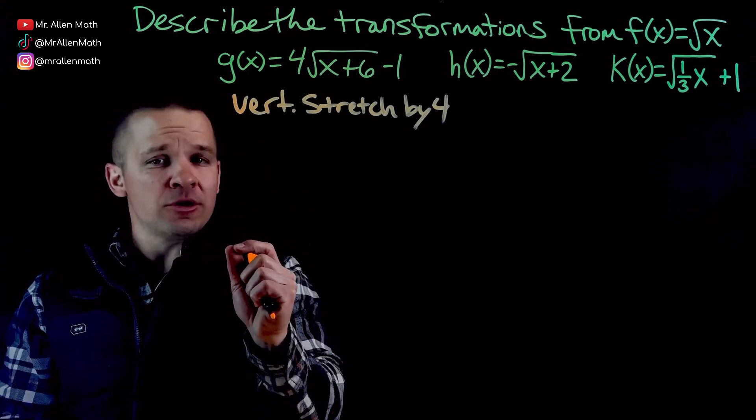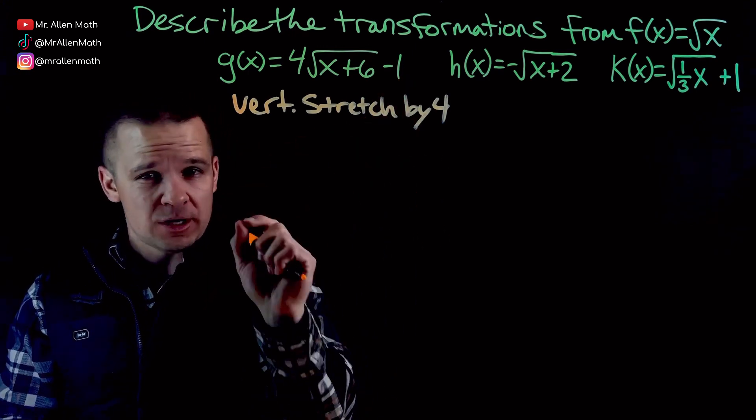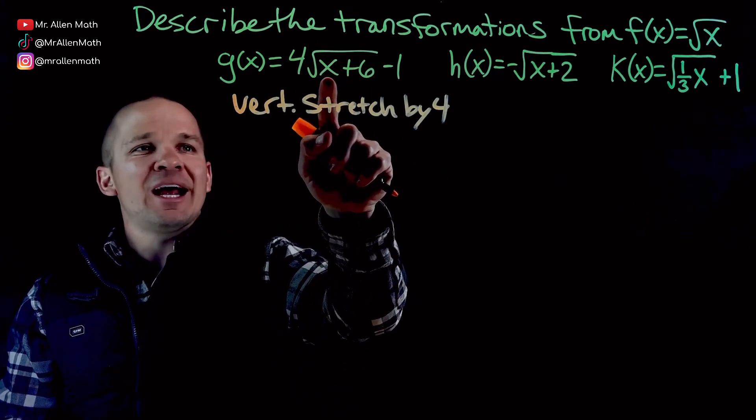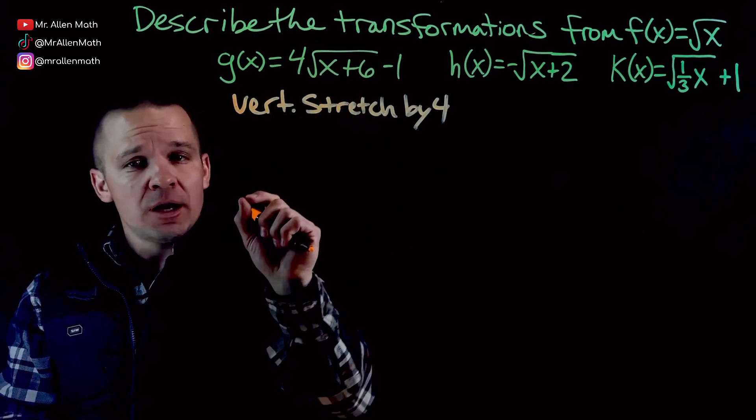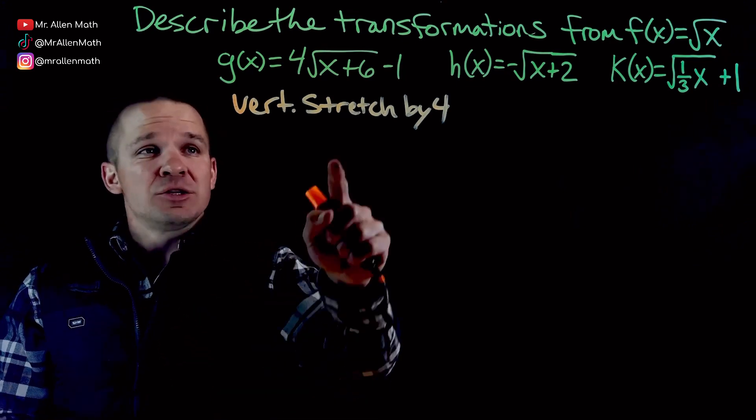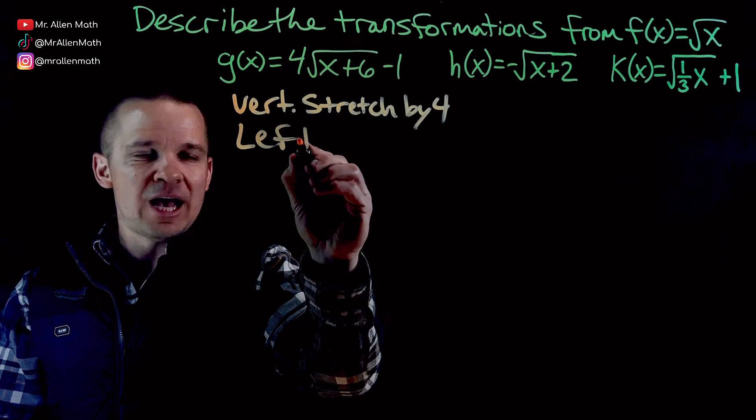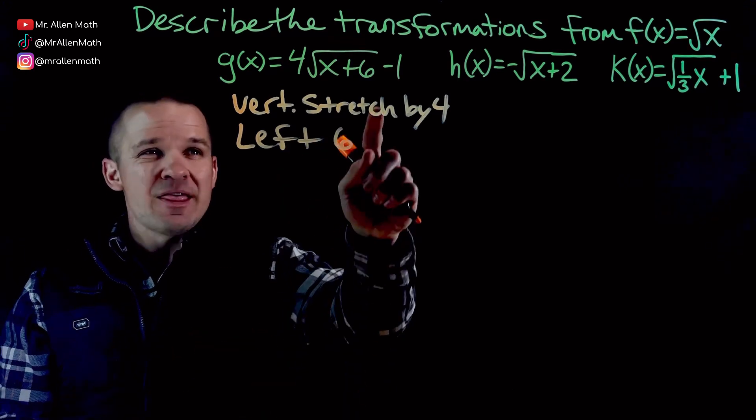Outside is vertical. Inside is horizontal. That means that negative 1 is also going to be vertical. We'll deal with that in a sec. Let's go left to right. So now I've got x plus 6 on the inside. Inside, we've got to think opposite. So when it's plus 6, it's actually going to the left 6.